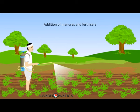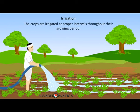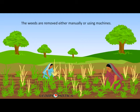The second step is the sowing of seeds in the field. The next step is the addition of manure and fertilizers to the soil. Then comes irrigation of the field — the crops are watered at regular intervals throughout their growing period.